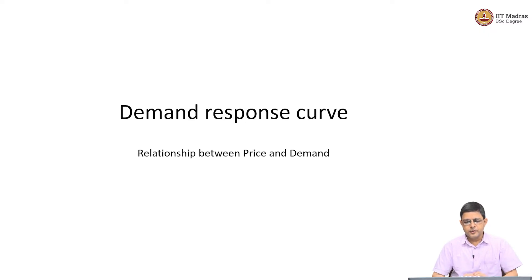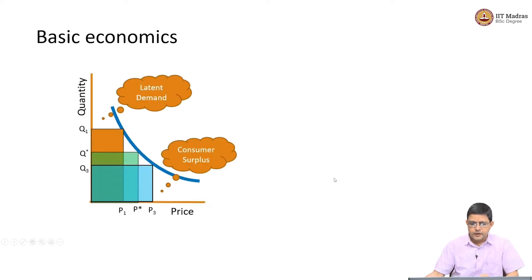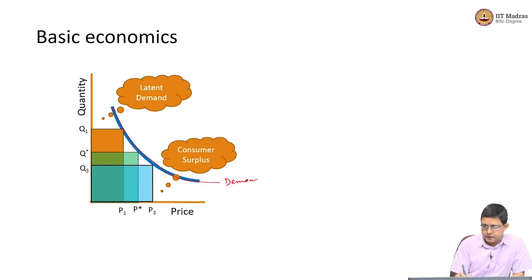We are going to discuss various aspects, various relationship types between price and demand, and in general, the basic mechanism of this price and demand relationship through this demand response curve. Typically, this is what a demand response curve is going to look like — a rough curve which slopes downward.